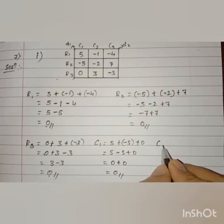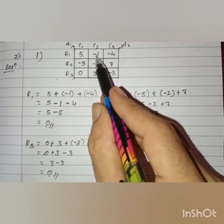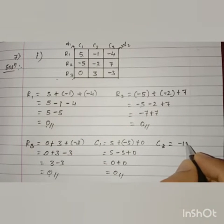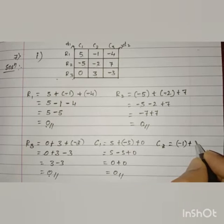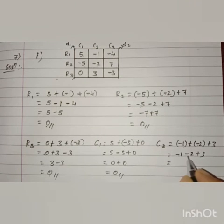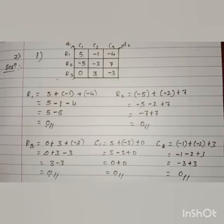Let us find out column 2. In column 2 we have minus 1, minus 2, and 3. So minus 1 plus minus 2 plus 3. Minus 1 minus 2 is minus 3, plus 3 as it is. Different signs: minus 3 plus 3 becomes 0. So column 2 also gives 0.